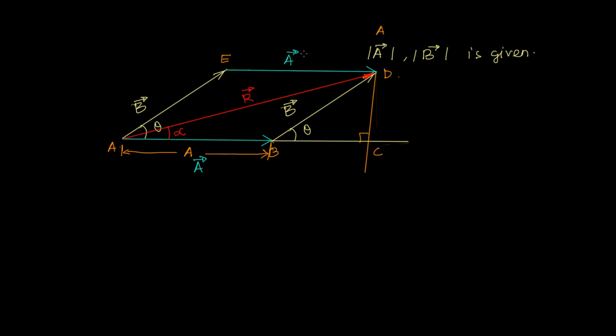What is the length AB? AB is nothing but A — the magnitude. The moment you remove the vector arrow from above a vector, whatever is left becomes the magnitude. So AB equals A. The length BD equals B, because this vector is B and removing the arrow gives us the magnitude B. So BD = B.